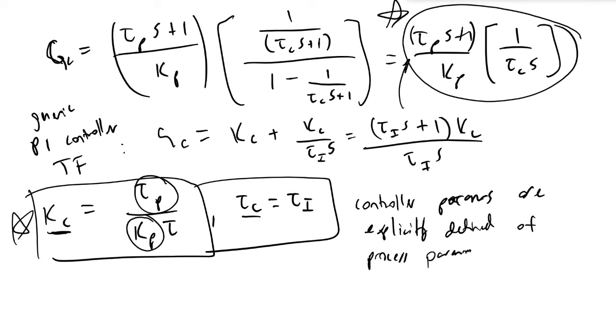And then a final thing to note here is that with our controller transfer function that we have obtained via the direct synthesis model, we see this one over s behavior, this integrating behavior, and this is a consequence of letting Kc equals zero, equal one. And so because we let Kc equal one, we have offset free tracking.